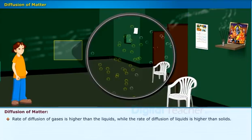Rate of diffusion of gases is higher than the liquids, while the rate of diffusion of liquids is higher than solids.